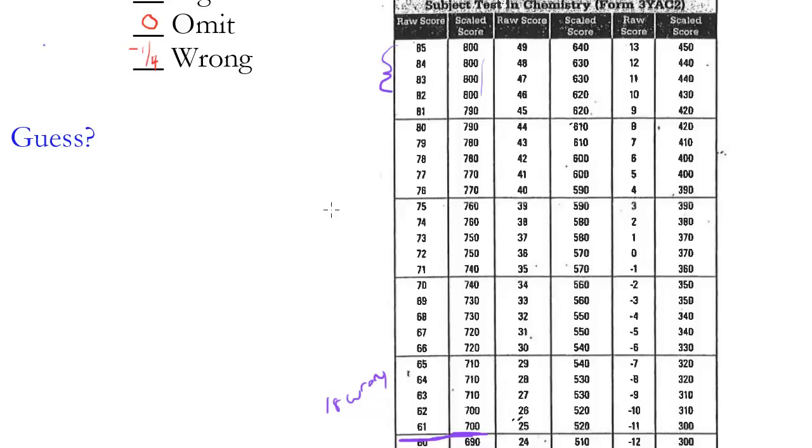Now, one thing to keep in mind is the average on the SAT subject test in chemistry is much higher than it is for the regular SAT. So the regular SAT sections are around 500. The average for this is in the 630 region or so. So you've got to keep that in mind.